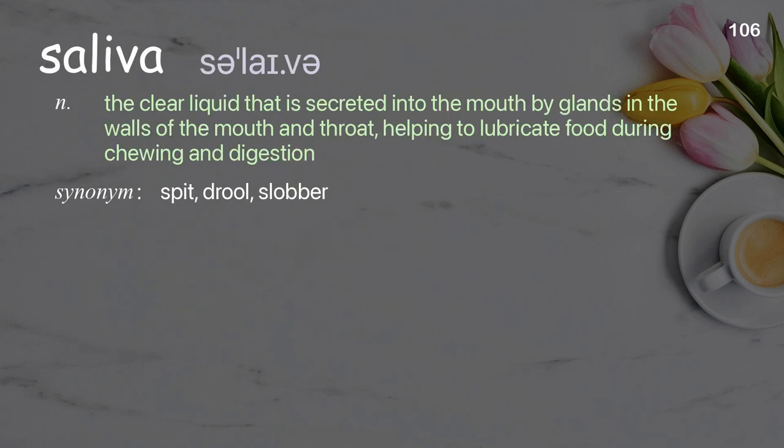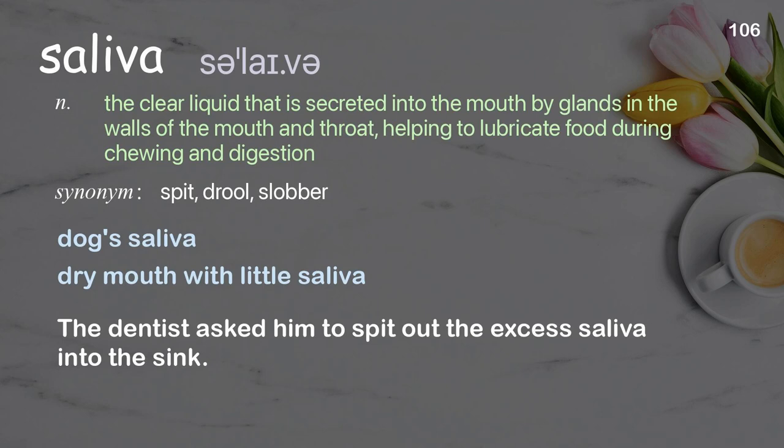Saliva: the clear liquid that is secreted into the mouth by glands in the walls of the mouth and throat, helping to lubricate food during chewing and digestion. Examples: dog saliva, dry mouth with little saliva. The dentist asked him to spit out the excess saliva into the sink.